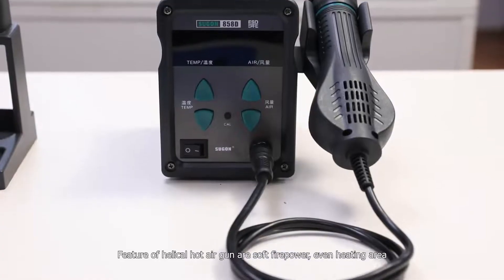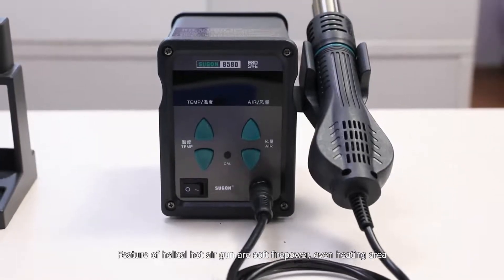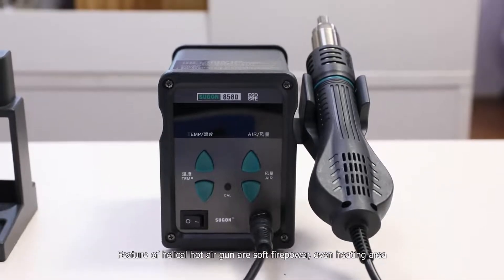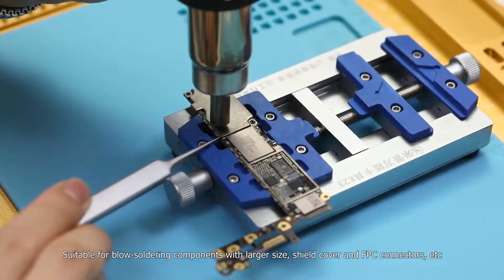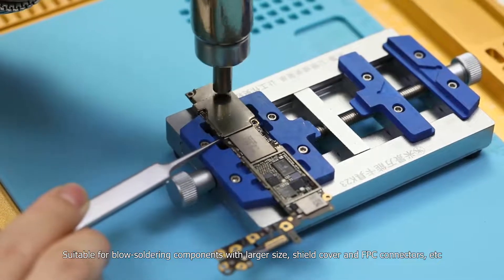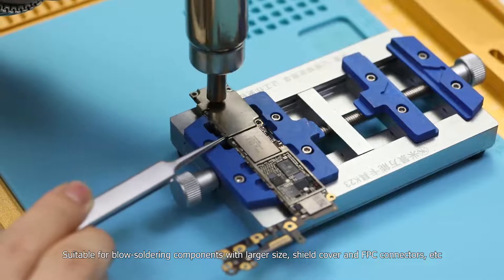Features of helical hot air gun are soft firepower, even heating area. Not easy to blow out IC chips. Suitable for blow soldering components with larger size, shield cover and FPC connectors.